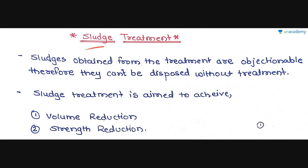We have seen all the classifications related to what processes come under preliminary treatment, primary treatment, and secondary treatment. We have completed lessons on activated sludge process and trickling filter. The settled suspension obtained from the secondary clarifier is known as sludge. Sludge is a semi-solid slurry and can be produced as sewage sludge from wastewater treatment processes.